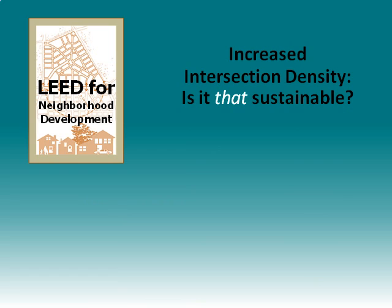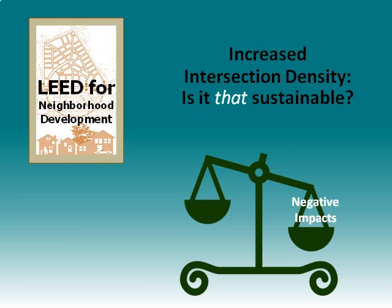Some have argued that increased intersection density results in more utility infrastructure, more street pavement, and more impervious area, all of which seem counterproductive to sustainability. Higher intersection density does mean shorter blocks, and therefore more street network. So there is some validity to this argument. As is often the case, there are pros and cons with sustainable decisions and directions.